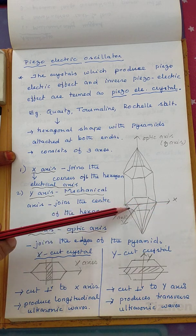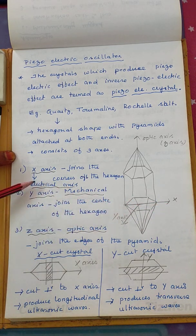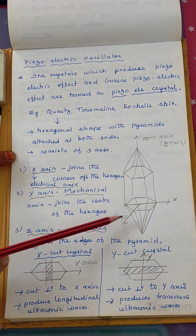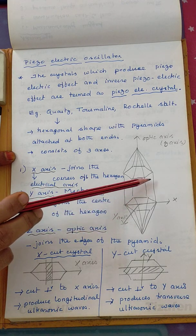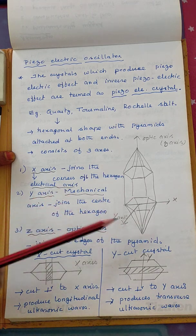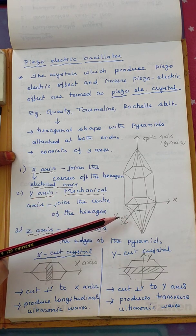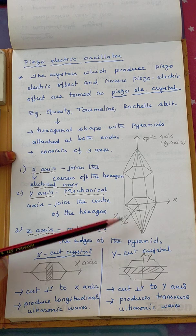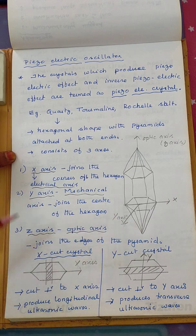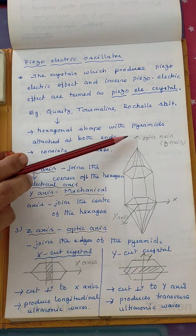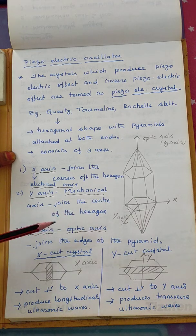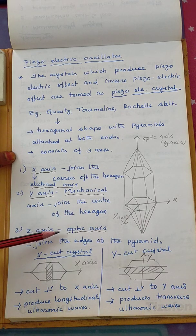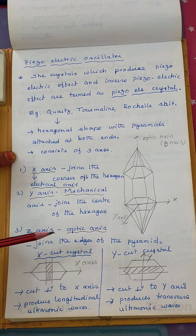From the center we have the X, Y, and Z axes. The X axis joins the corners of the hexagon and is known as the electric axis. The Y axis is drawn at the center of the hexagon and is called the mechanical axis. The Z axis joins the corners of the pyramids and is called the optic axis.